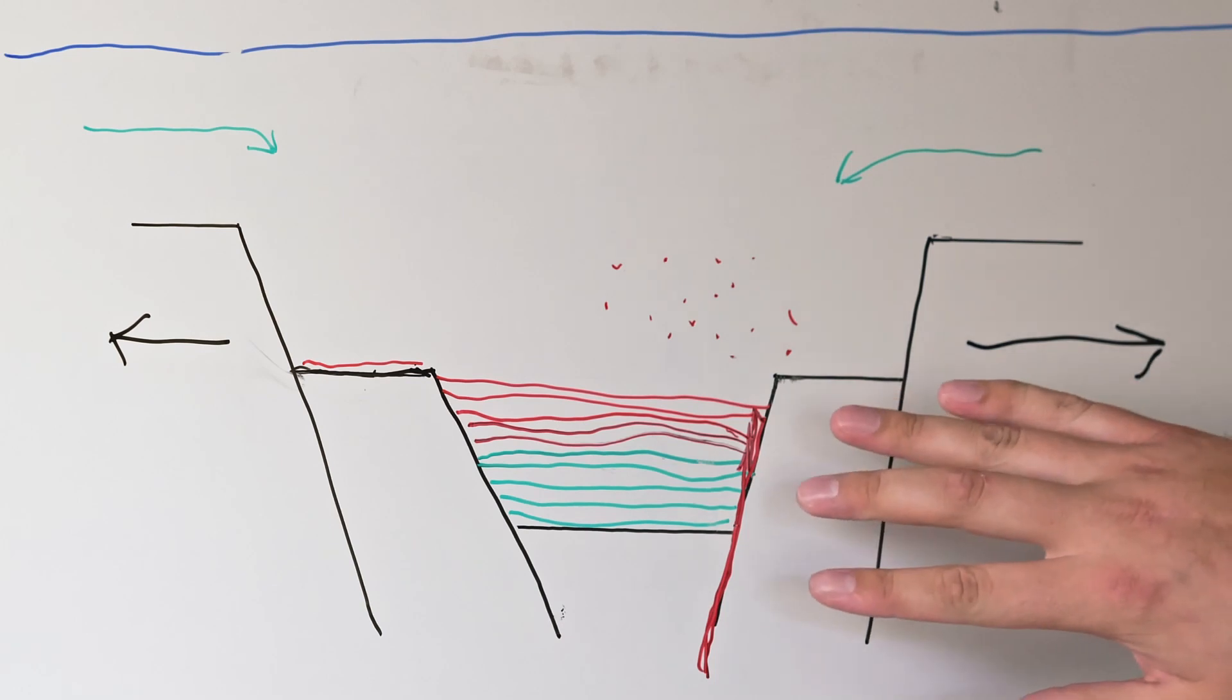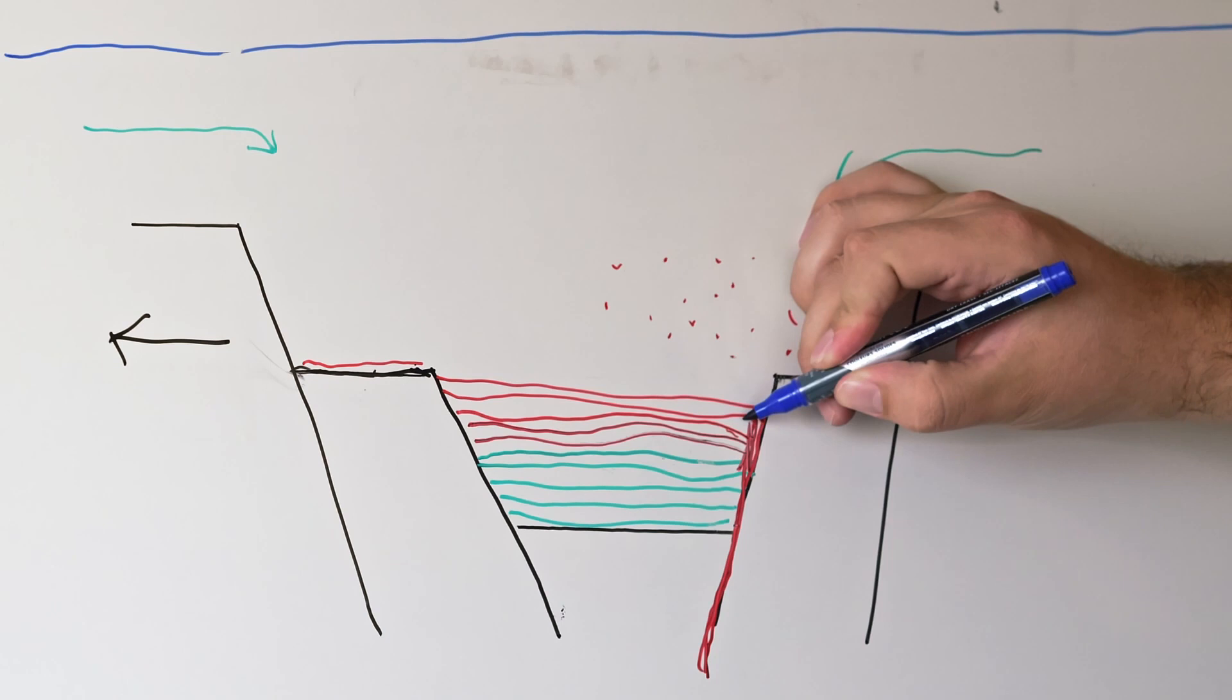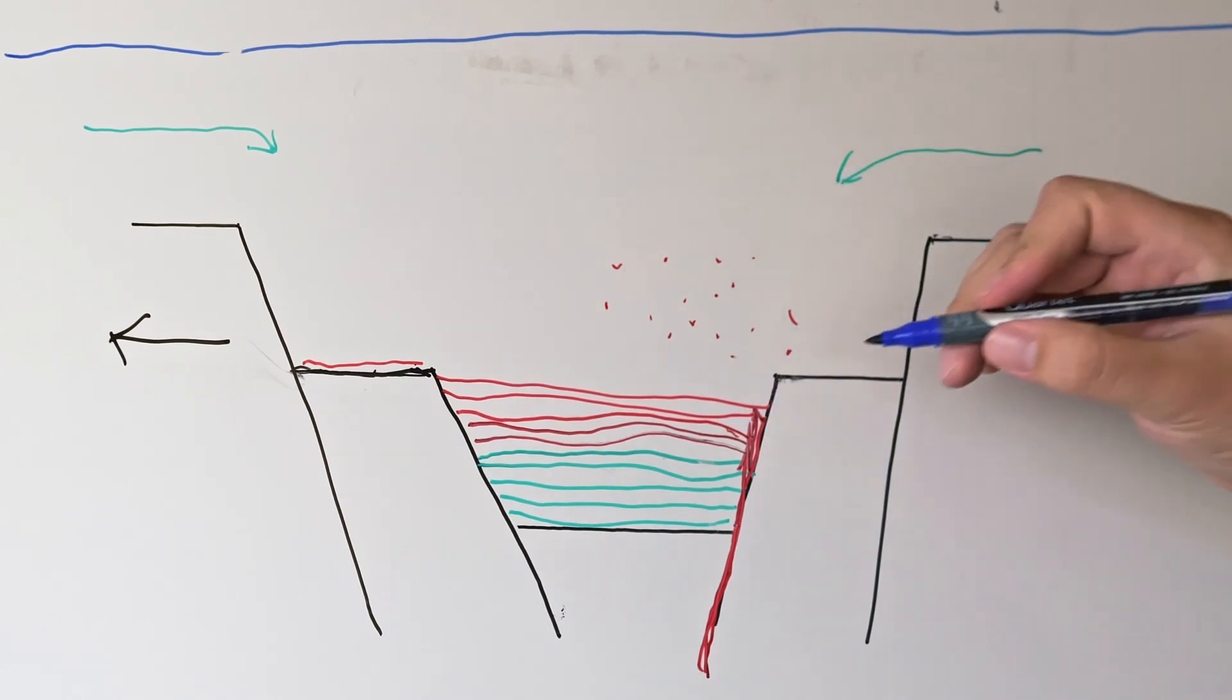While mineralizing fluids exploit this fault, we'll also get other fluid events happening that eventually come through and rip up our sediments and form what's called fragmentals.